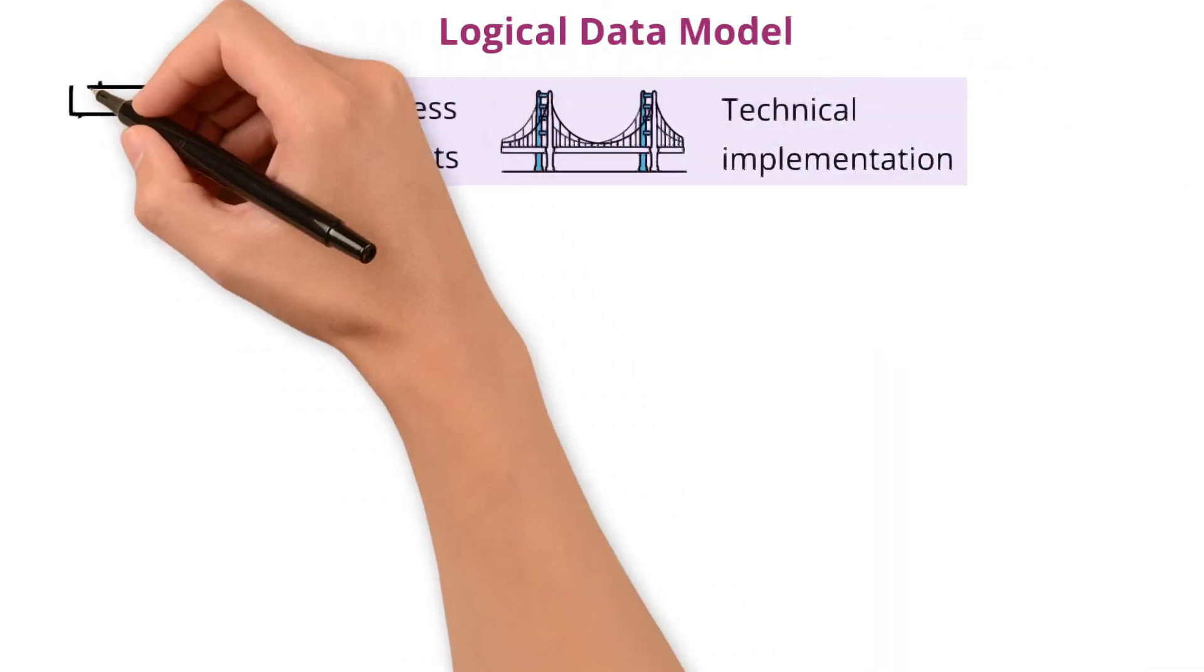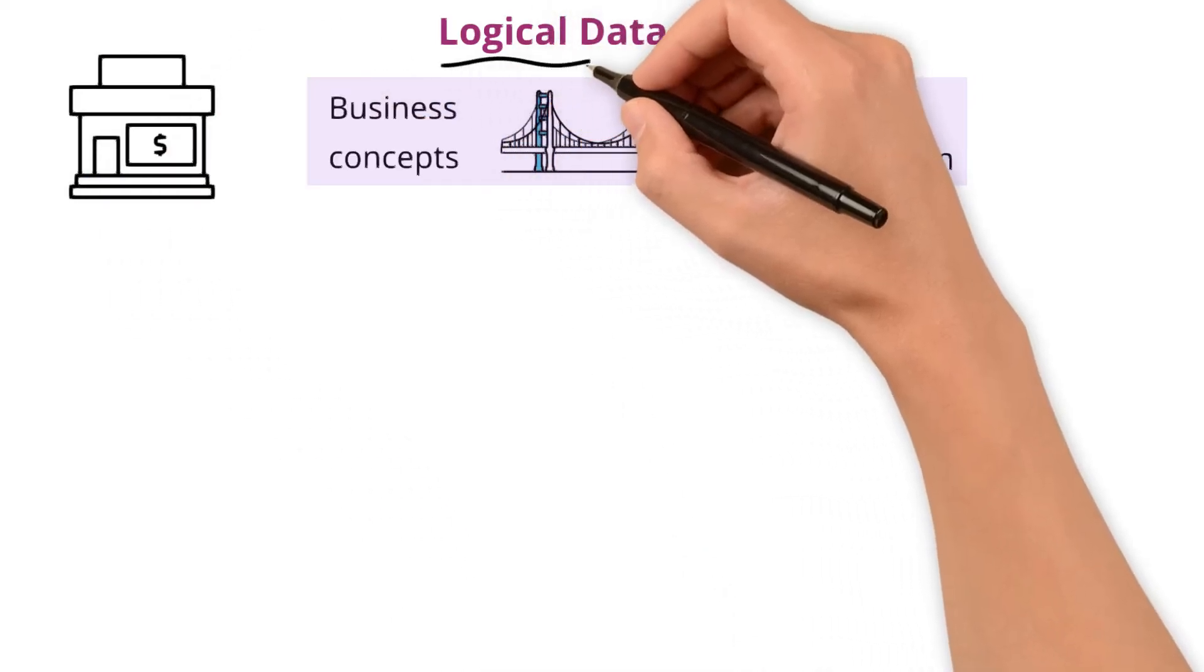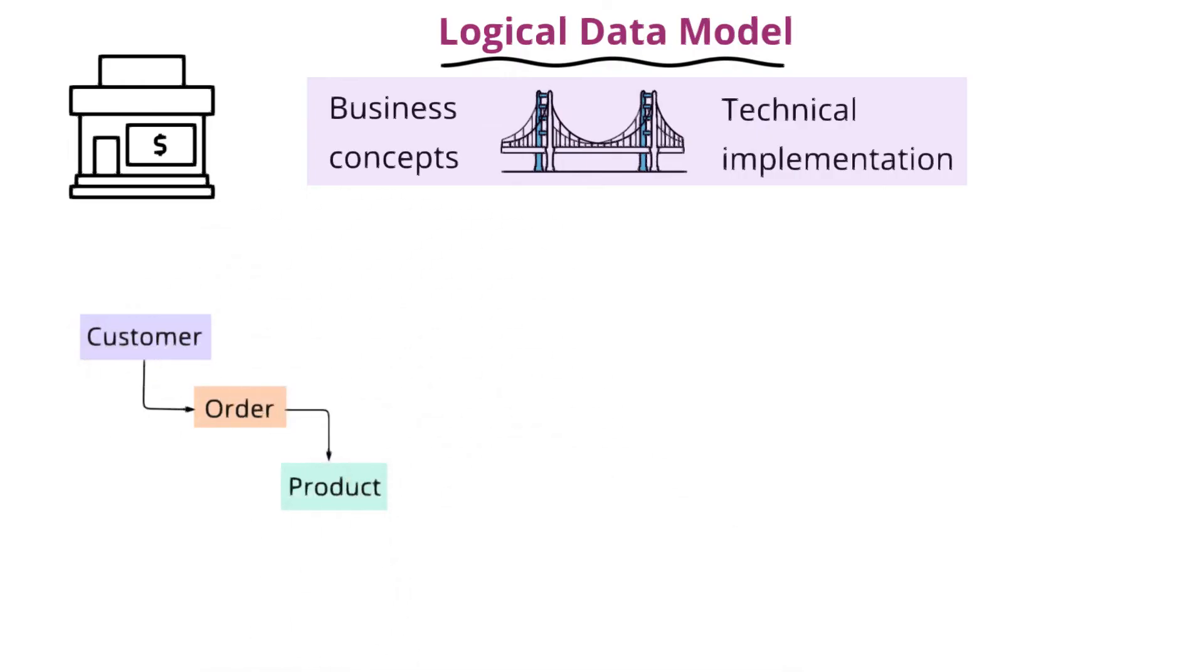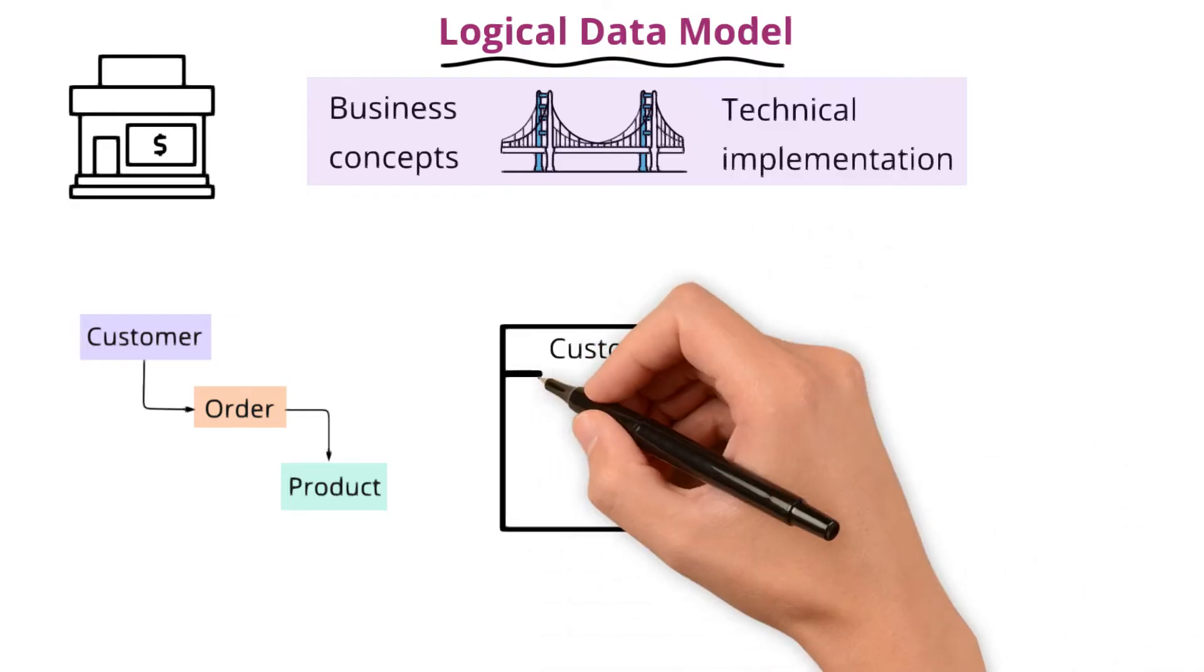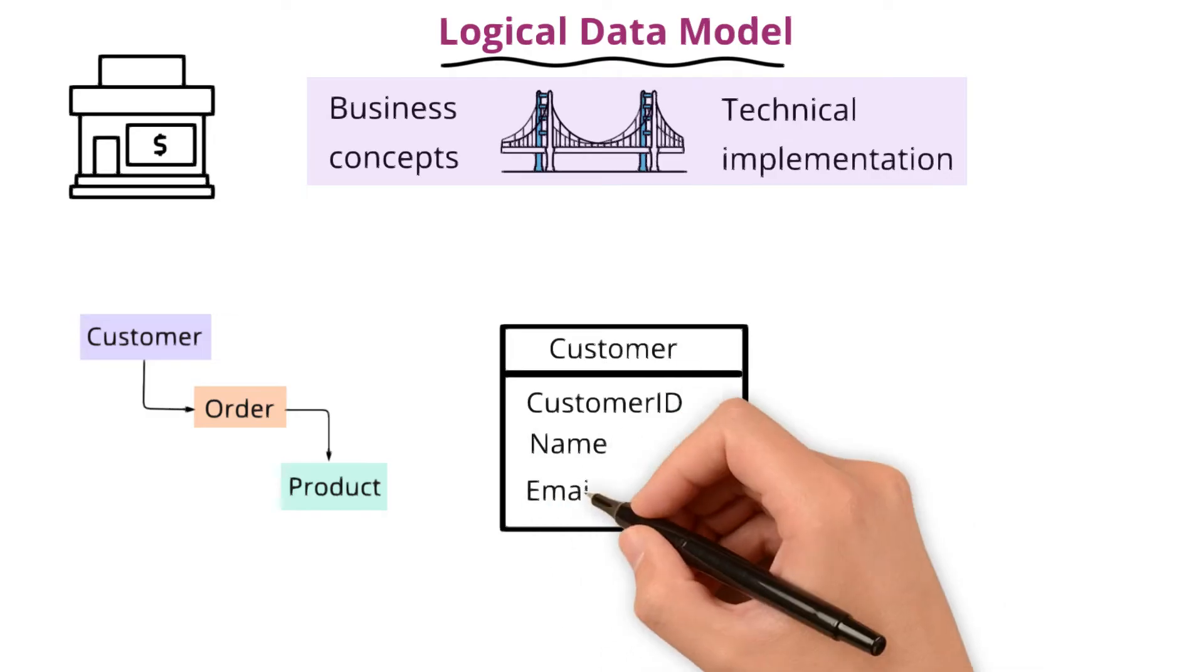Returning to our previous retail business example, the logical data model would add more details to the customer, order, and product entities. For customers, we'd now specify attributes like customer ID, name, email address.